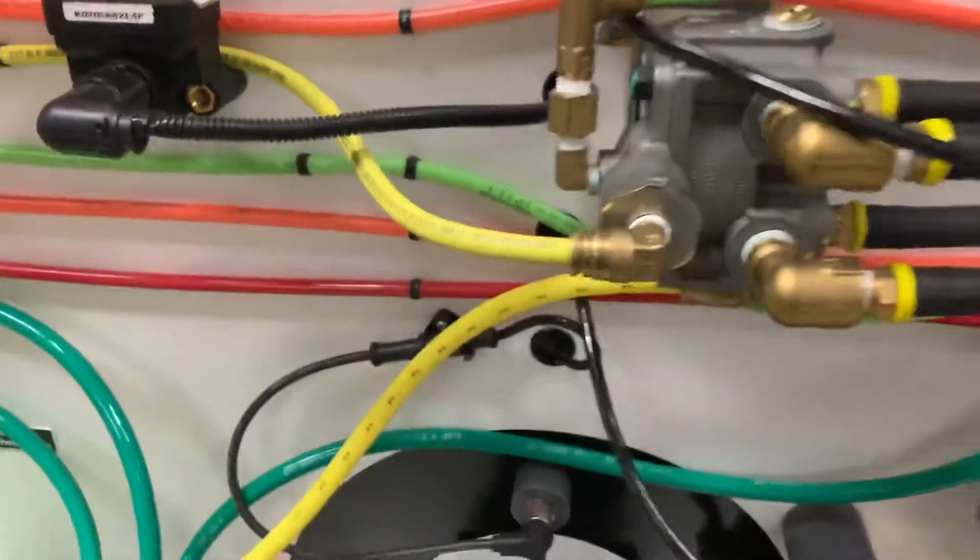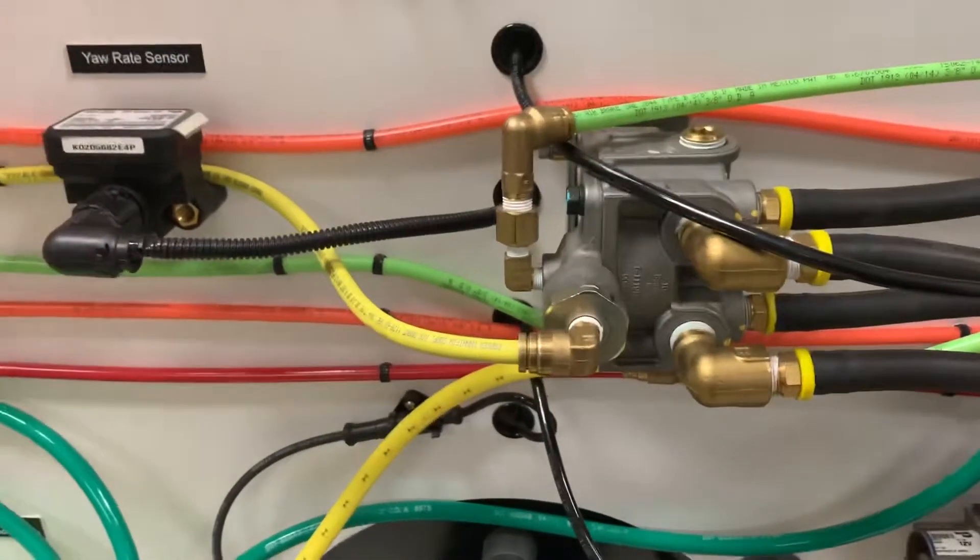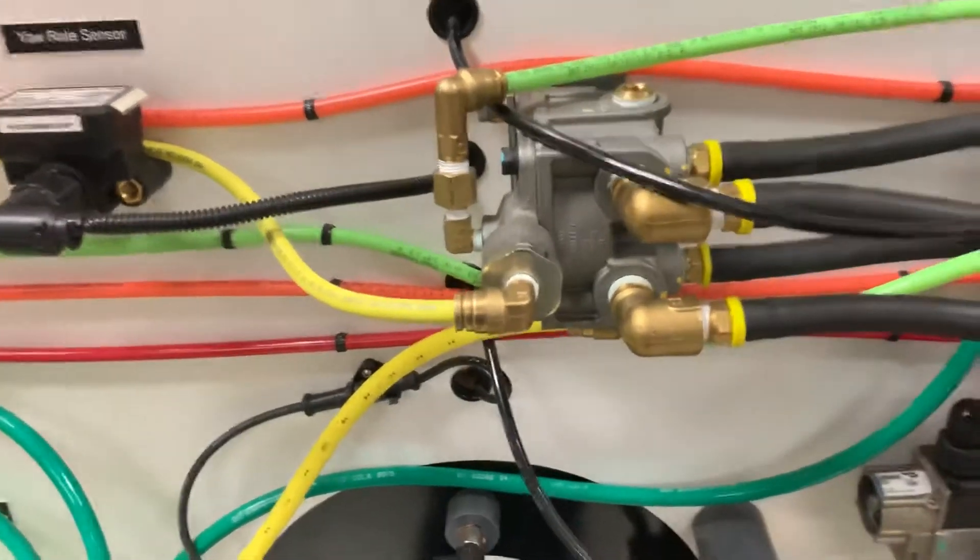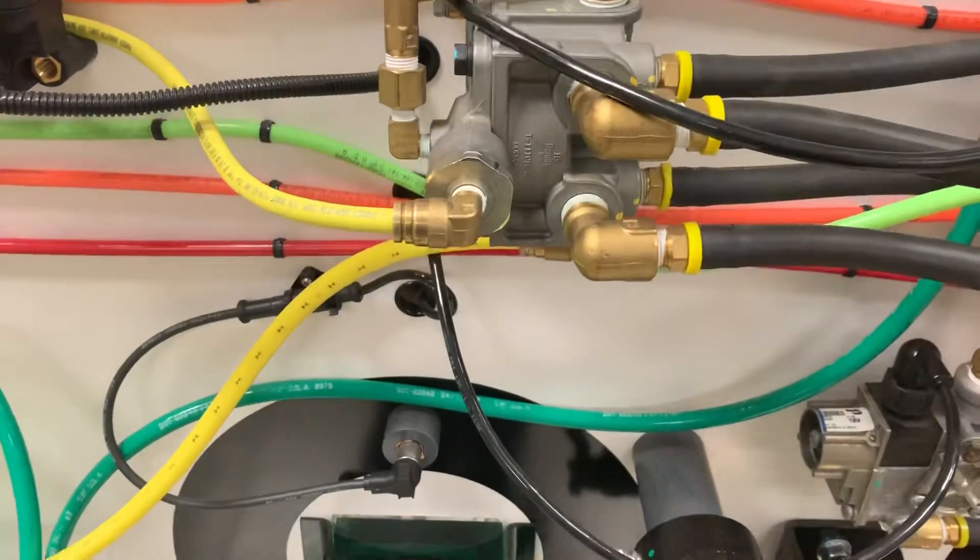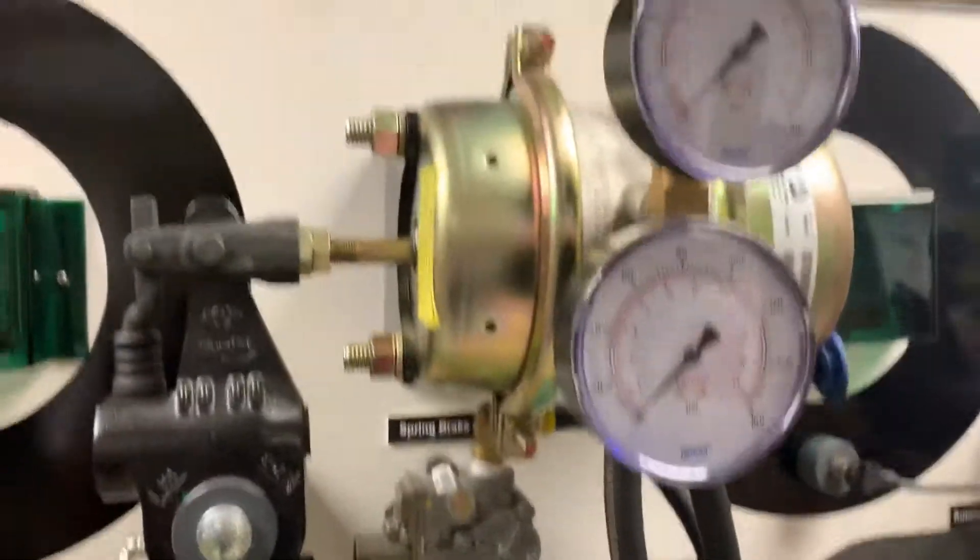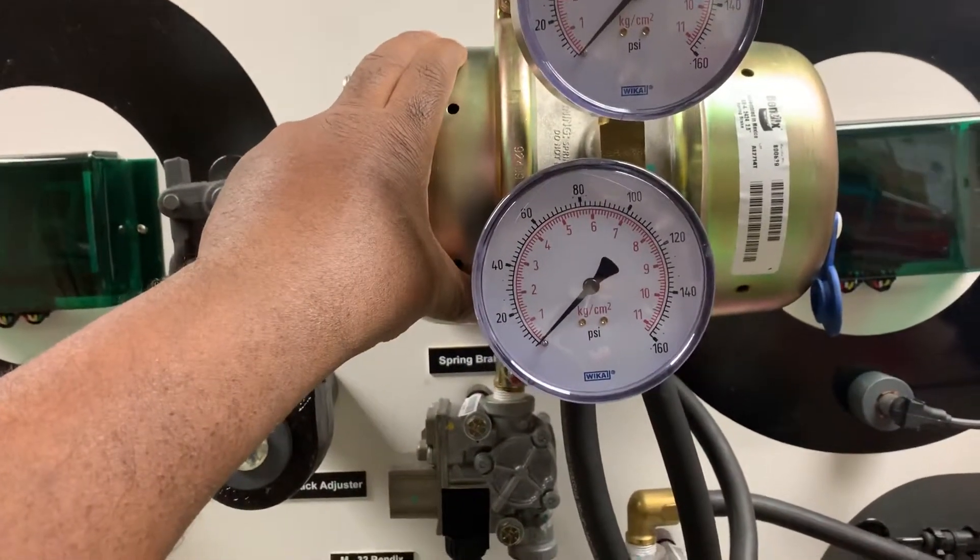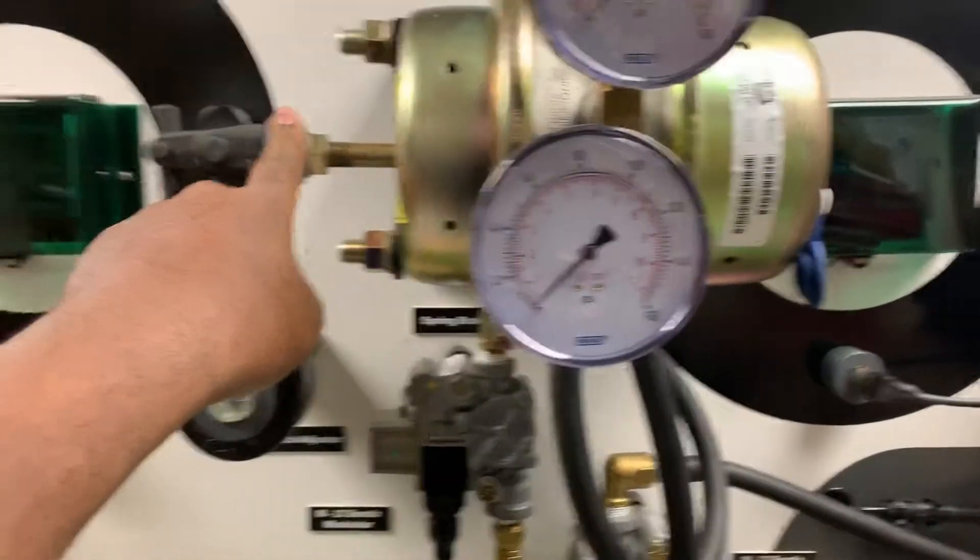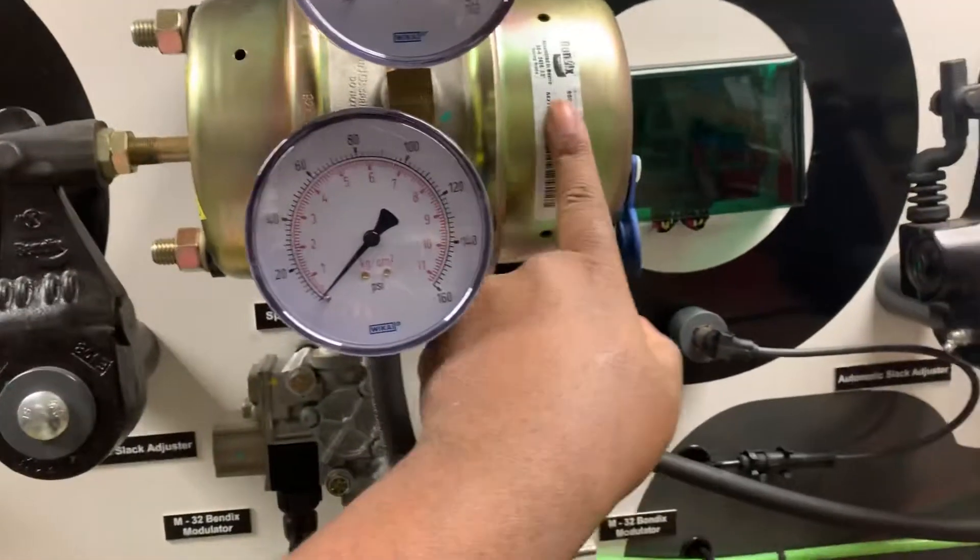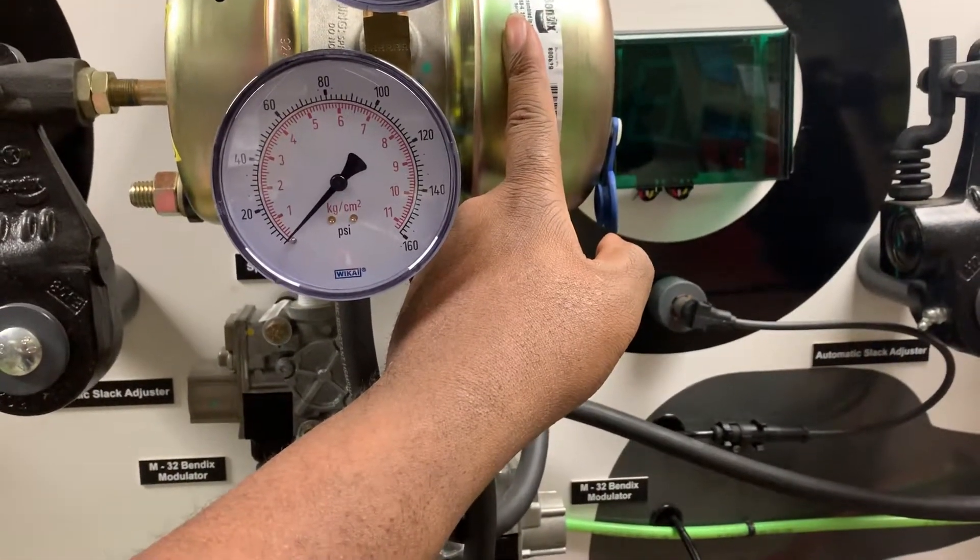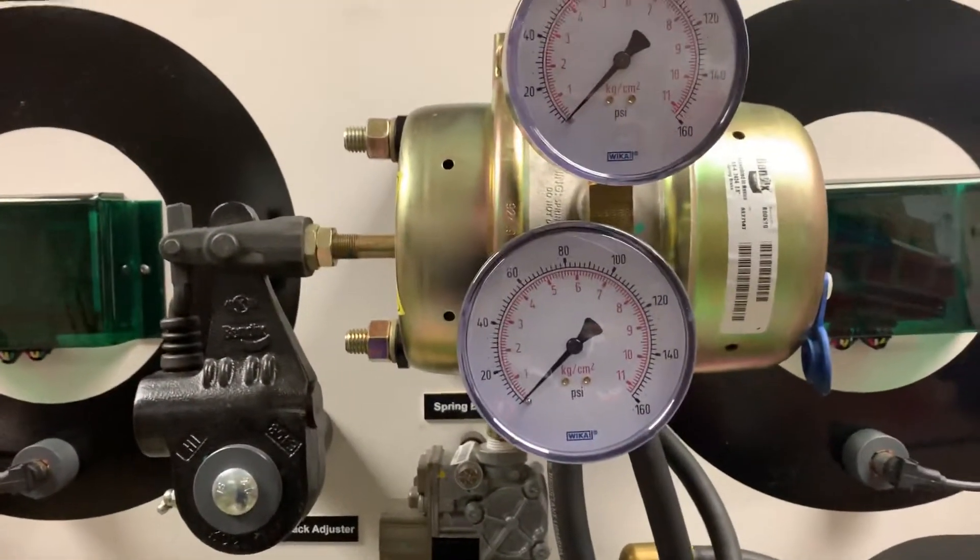Now, there are other valves that can be present on older trucks that have anti-compounding built into them. And we'll talk about some of those valves later, but basically no matter what sort of valve is doing the anti-compounding, that's what it's going to do. It's going to split the application. So we're going to have application air to our service brake, and we're going to have caging done inside of our parking brake side of our can, which is going to prevent double application or compounding.